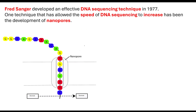The development of the Sanger technique occurred in 1977, which was a slow process compared to today. Techniques are improving as technology improves. Another technique that sped up DNA sequencing — increasing the rate at which we can sequence — is through the development of nanopores. You don't need to know details about nanopores, but you do need to understand that it works in the same way, in that the DNA base sequence will be able to be sequenced.